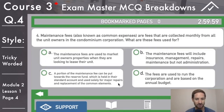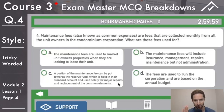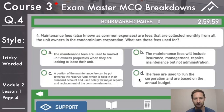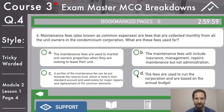C: a portion of the maintenance fees can be put towards the reserve fund which is held in their standard account and used solely for major repairs and replacement of the common elements. This is a tricky worded question — this is held in their trust account, not their standard or general account. Small little things like that you've got to look for. D: the fees are used to run the corporation and are based on the annual budget. That is the answer.